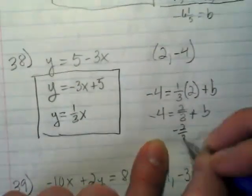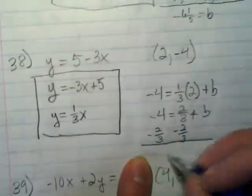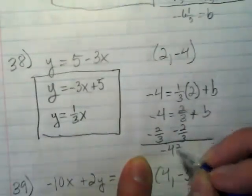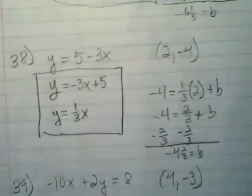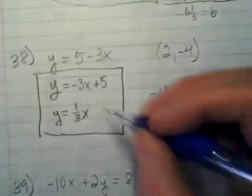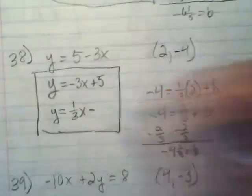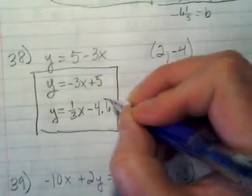I'm going to subtract 2 thirds. And we end up with negative 4 and 2 thirds equals b. And 2 divided by 3 gives us that 0.6 repeat. So, this would be minus 4.6 repeat.